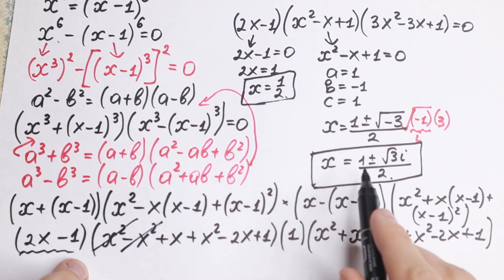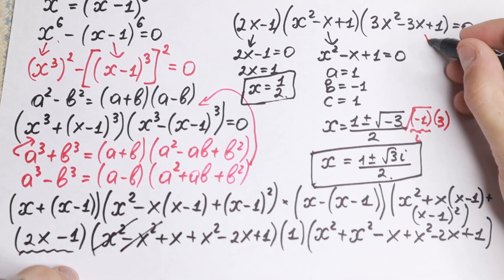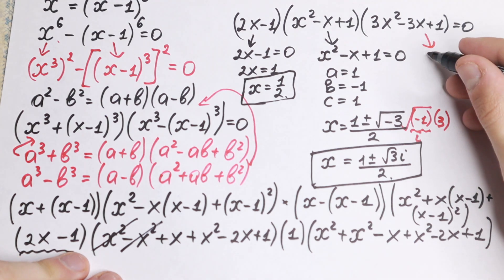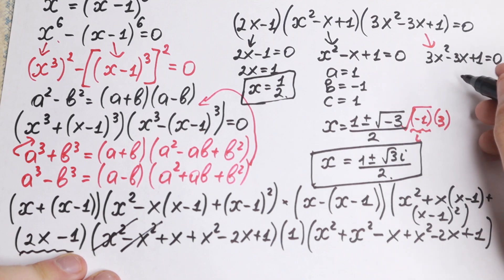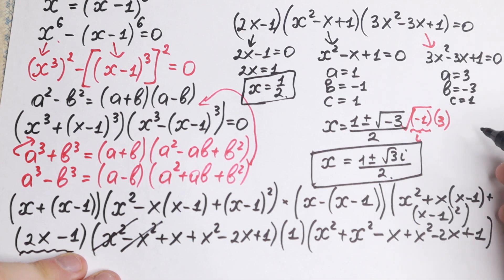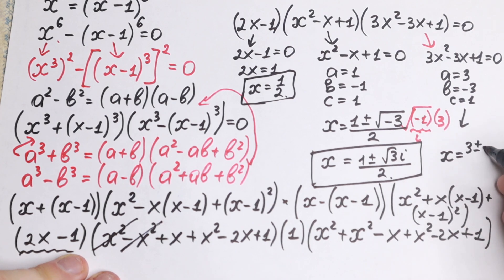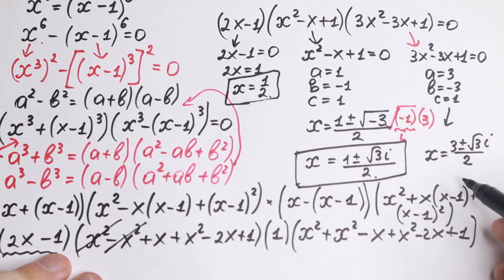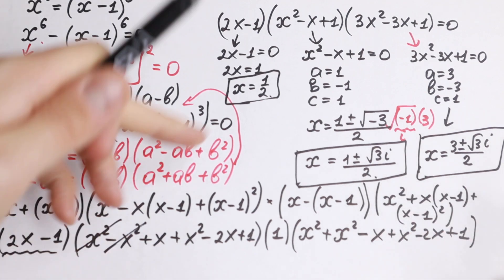That gives us two complex roots. Now solving the last factor: 3x squared minus 3x plus 1 equals zero, with a equals 3, b equals minus 3, c equals 1. Plugging into the quadratic formula gives x equals 3 plus or minus i times the square root of 3, all over 2. That is our last pair of roots — two roots here, two roots there, and one root from the first factor.